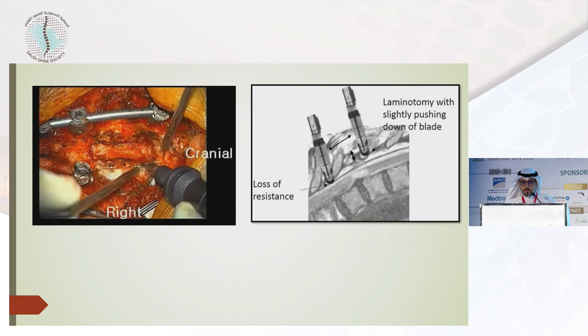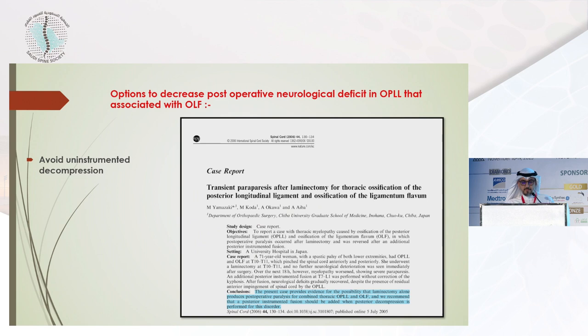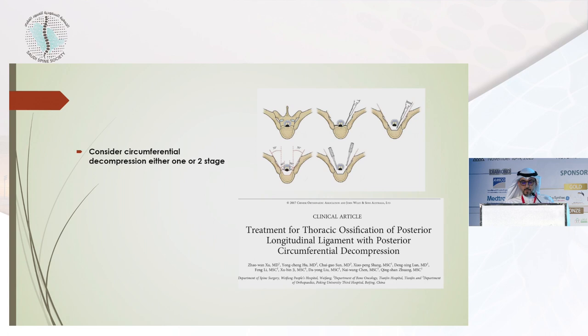Regarding the association of OPLL with ossified ligamentum flavum: compression of the cord occurs anteriorly by the OPLL and posteriorly by the ossified ligamentum flavum. Options to decrease postoperative neurological deficit include avoiding uninstrumented decompression — instrument first, put your rods, then do your decompression — and considering circumferential decompression, either as a one- or two-stage surgery.